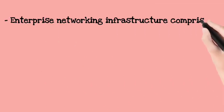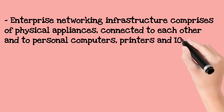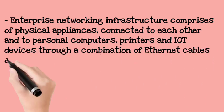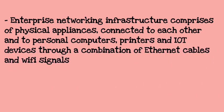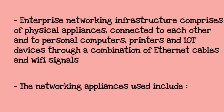The enterprise networking infrastructure consists of some physical appliances connected, such as personal computers, printers, and IoT — Internet of Things — devices, connected through a combination of ethernet cables or Wi-Fi signals.